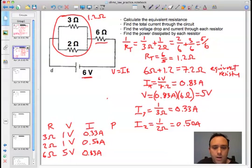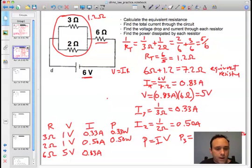So we can go ahead and solve for the power. P equals IV. So the power of the 3 ohm resistor is equal to 0.33 amps times 1 volt, and that's equal to 0.33 watts. Same calculation for the remaining 2 and 6 ohm resistors. So 1 times 0.50 amps is equal to 0.50 watts. And the last calculation is 5 volts times 0.83 amps, and that works out to 4.15 watts.